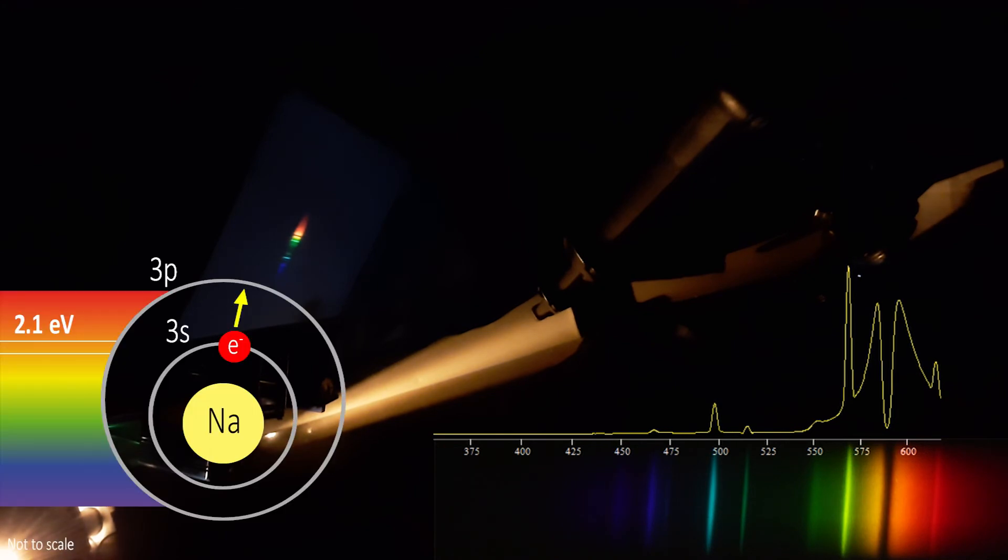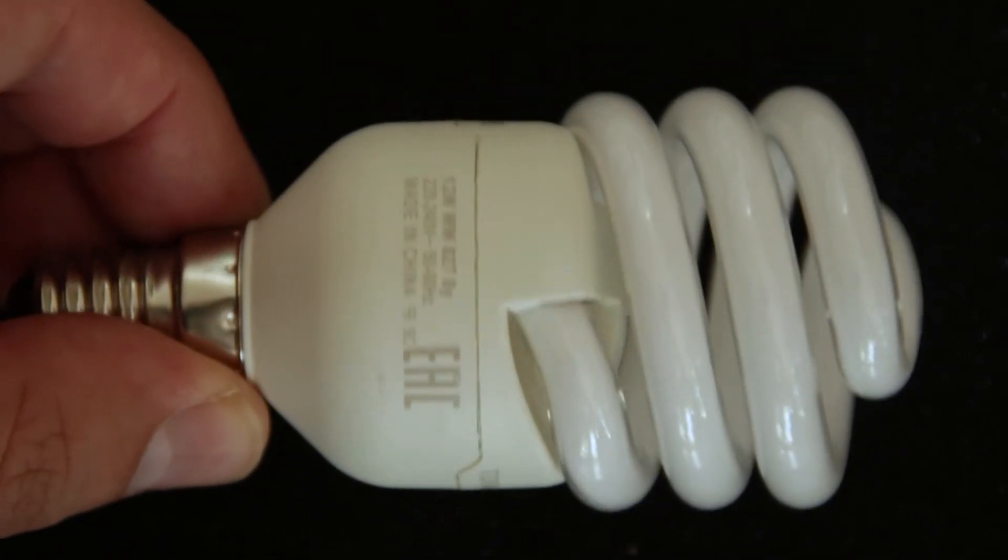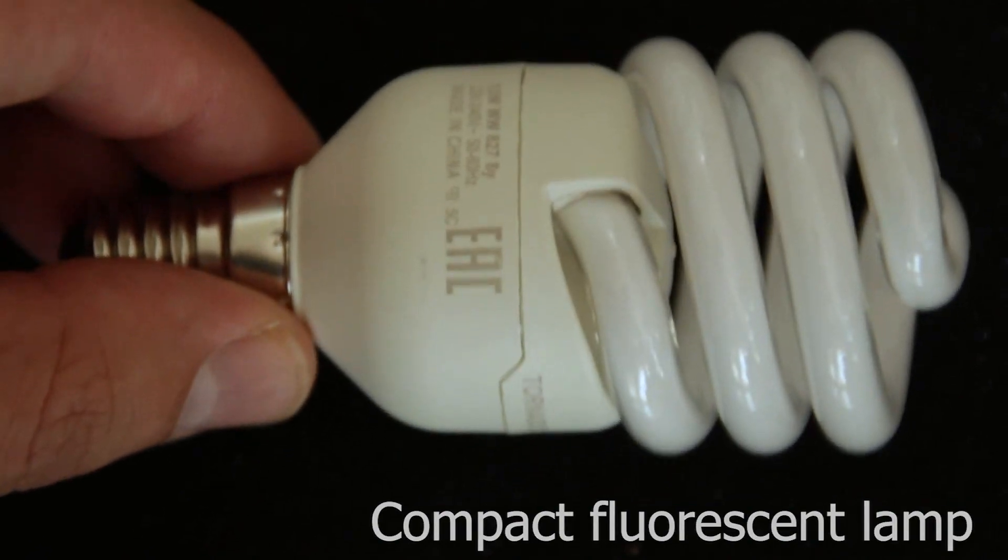That means two electron volt energy component of solar spectrum is absorbed by sodium atoms to rise electron from 3S to 3P orbital. Let's move to our next light source, compact fluorescent lamp.